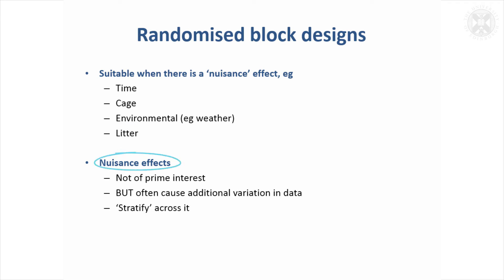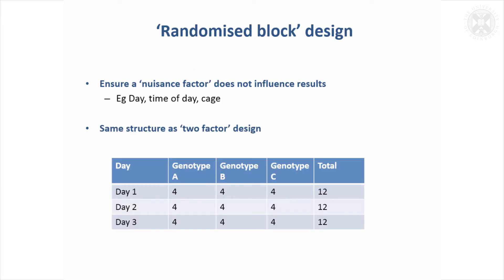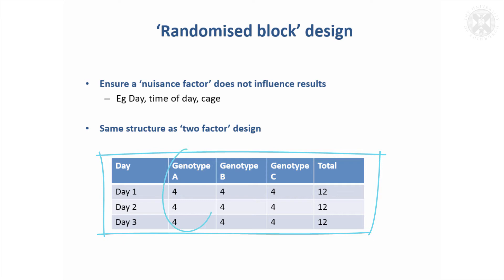You don't want to study these nuisance effects, but they can cause additional variation and biases in the data. So what we might do is stratify across them using this randomised block design. Here we've got an experiment that has to be carried out on different days, and we have to split our animals over different days. We might want to ensure, if we're comparing three genotypes, that there's an even number of animals on each day, and make sure that within each of those days they're randomly allocated.